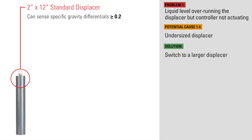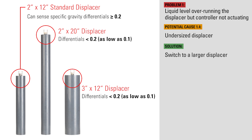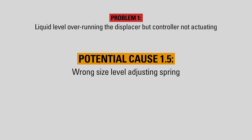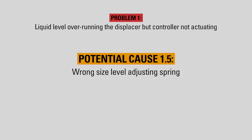Kimray's standard displacer is designed to sense specific gravity differentials as low as 0.2. If you have a lower differential, Kimray offers larger displacers that can sense down to a 0.1 differential. When switching out displacers, you may also need to change out the level adjusting spring, which brings us to our next potential cause: the wrong size level adjustment spring.